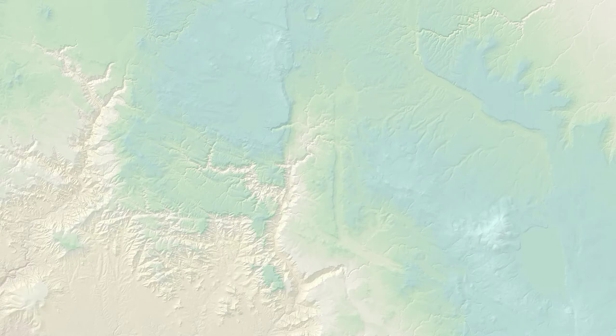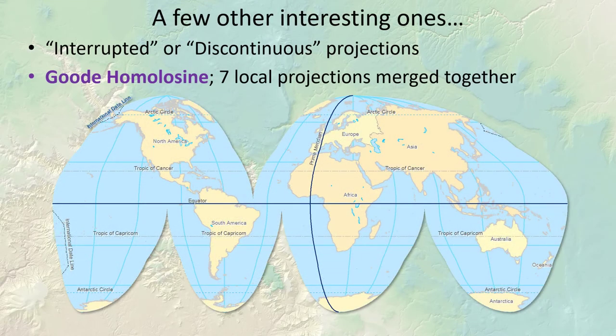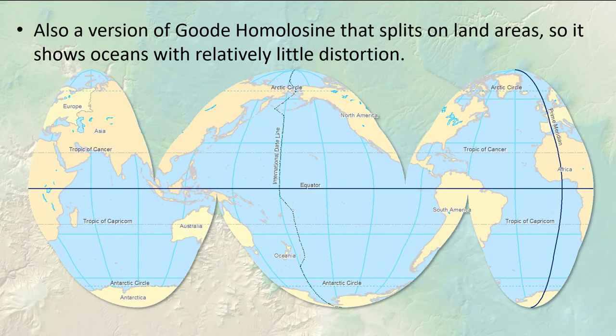Let's look at a few other interesting projections. They don't really fall into a single class like planar or conic. This Good Homolosine is actually formed by seven separate projections merged together. We refer to these multi-part projections as interrupted or discontinuous projections. This one is designed to show the shape of the land masses of the earth with relatively little distortion, so the earth is broken along the oceans. There's also a version designed to show the shapes of the oceans correctly.